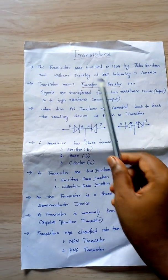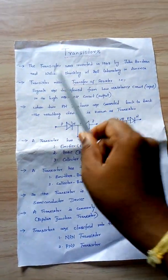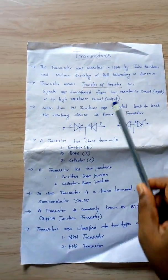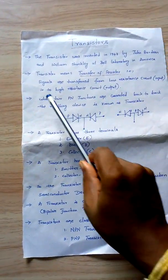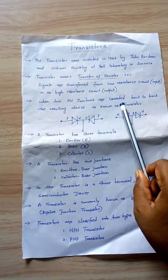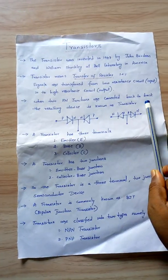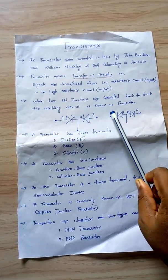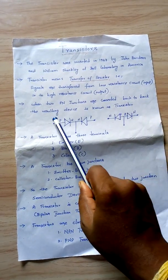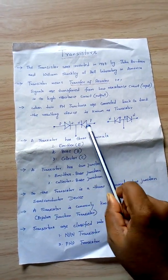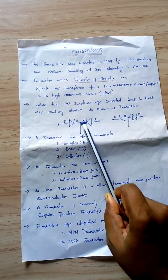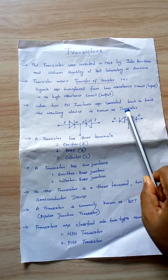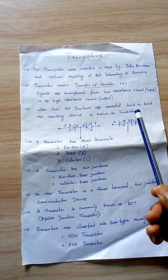So the meaning of a transistor is that it transfers the signal from low resistance to high resistance. Generally, when two PN junction diodes are connected back to back, the resulting device is known as a transistor.